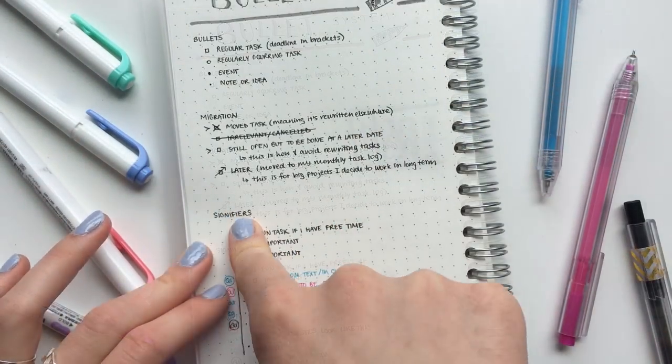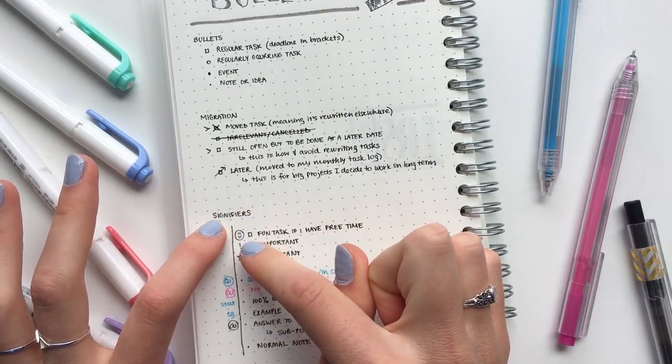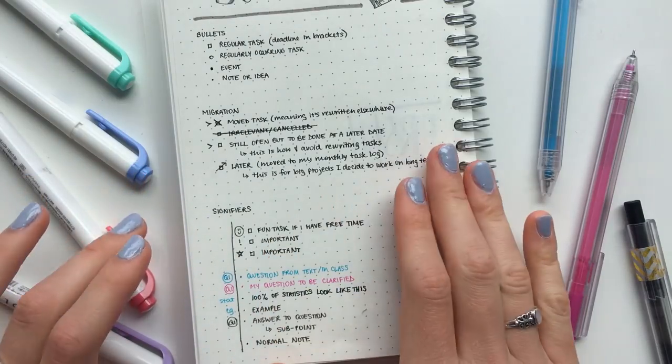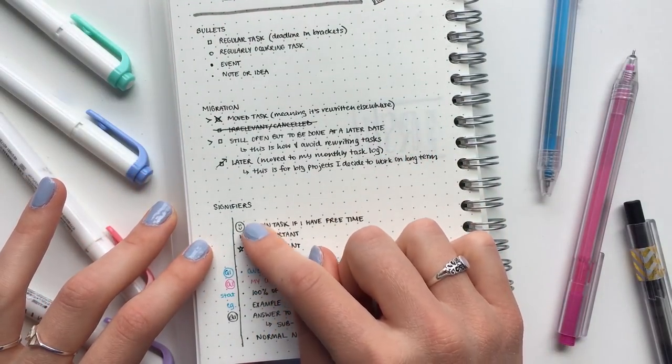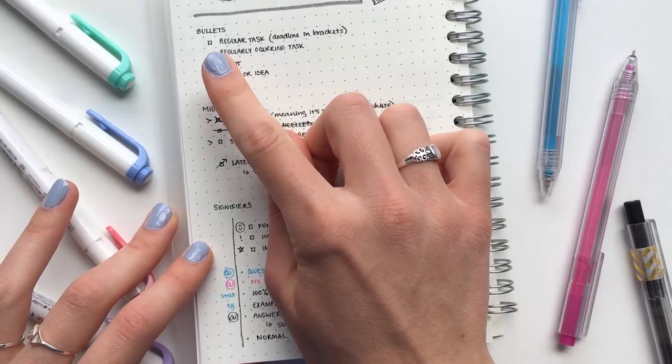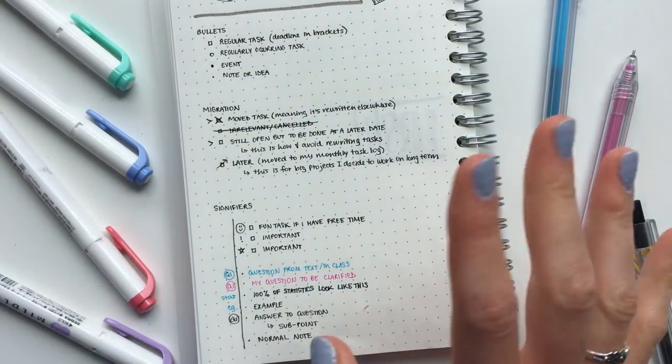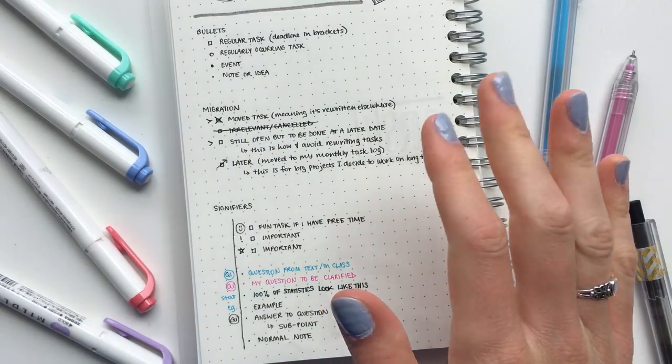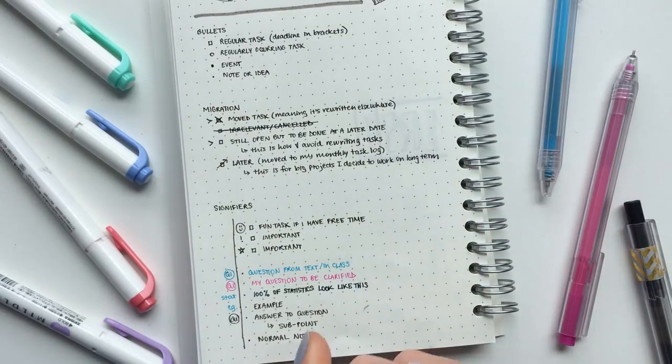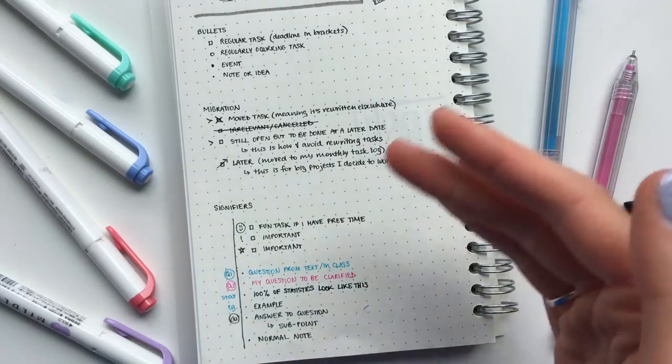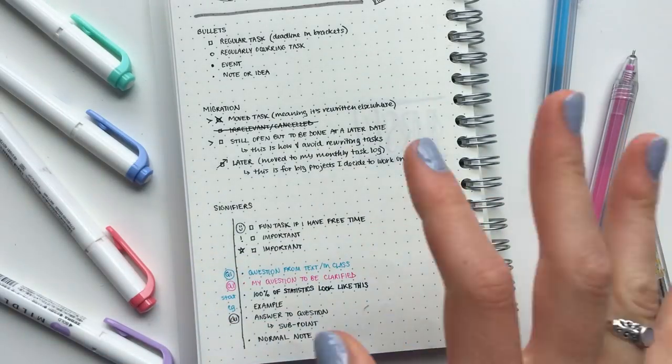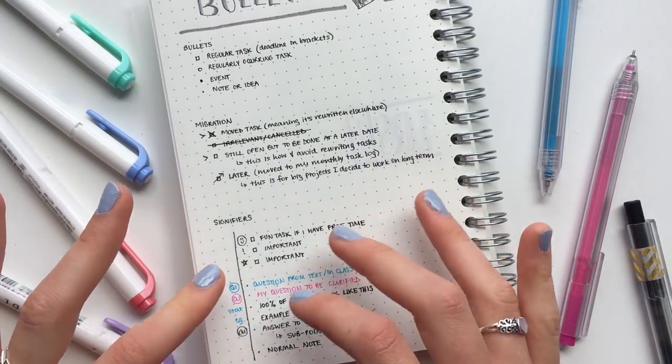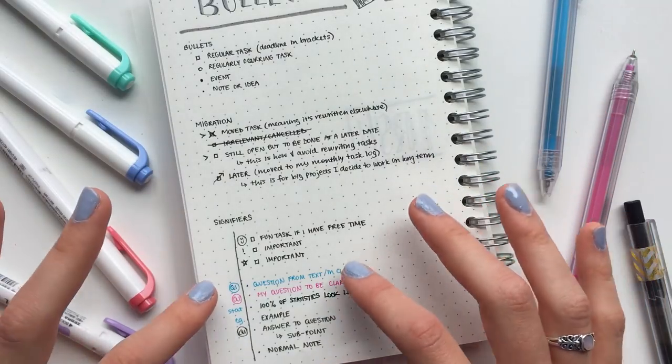And then for signifiers, these are basically symbols that I put in front of my bullets that make them stand out in a way. And this isn't just for the to-do lists, this is also for notes or ideas. If I have a happy face that's for fun tasks, if I have the free time in the day and I finished everything else, then I'll do that. The exclamation mark and the star are for various important tasks, and depending on how I'm feeling, I'll use the exclamation or the star, but it's not very specific, there's no specific meaning behind it.